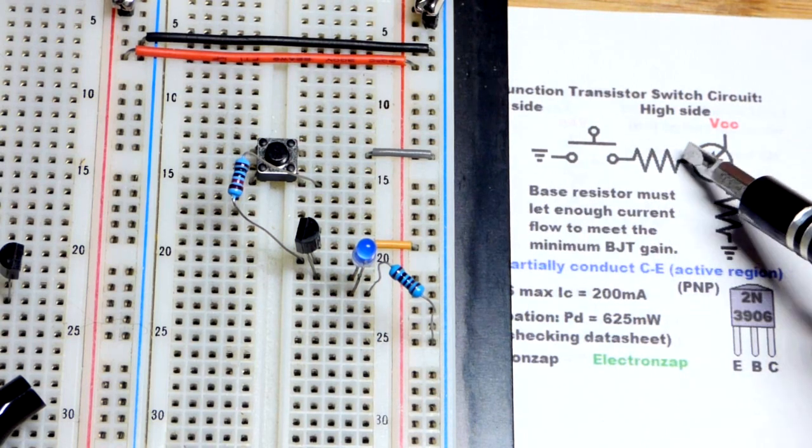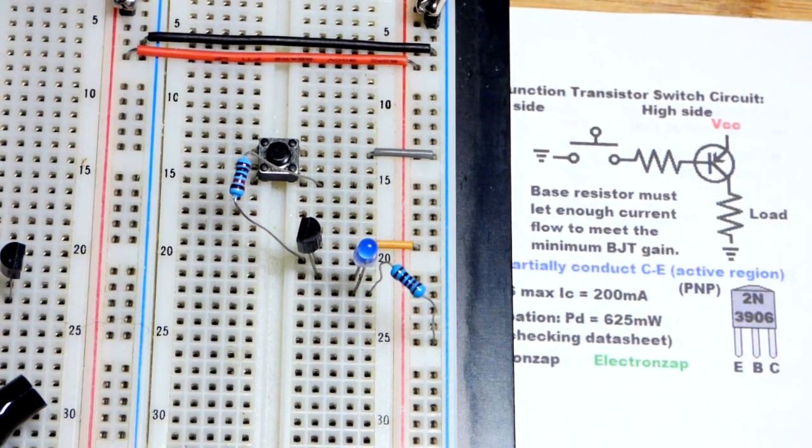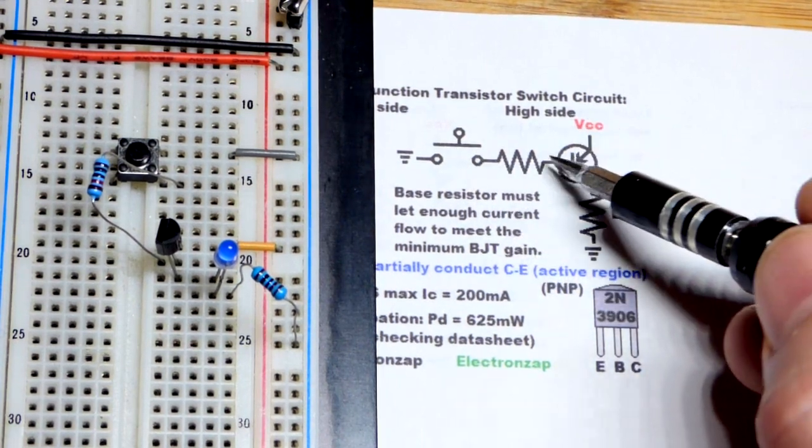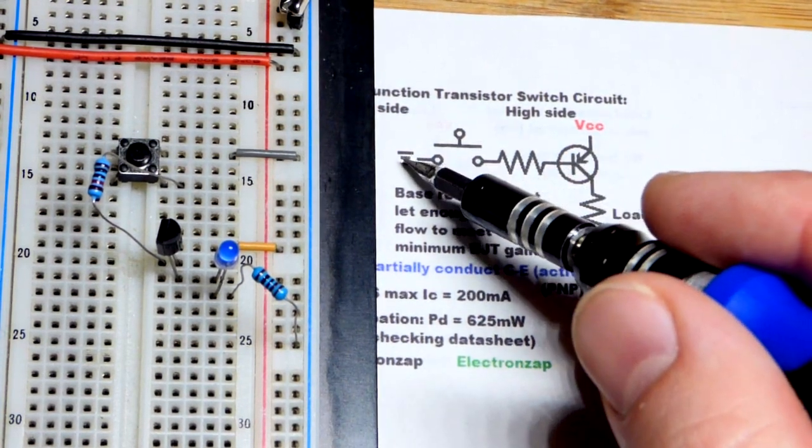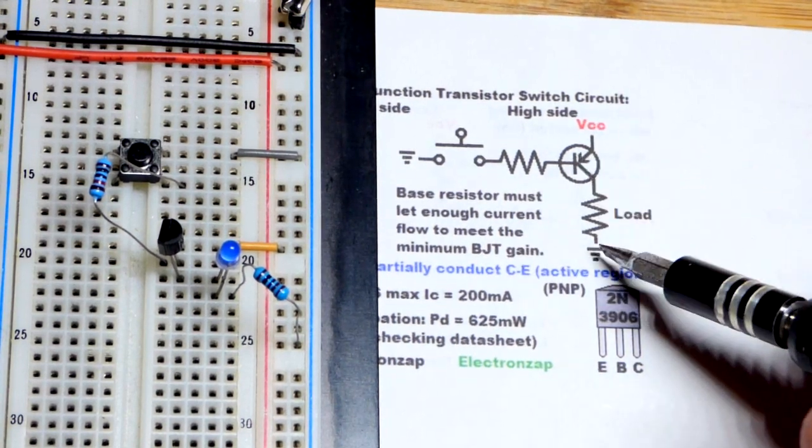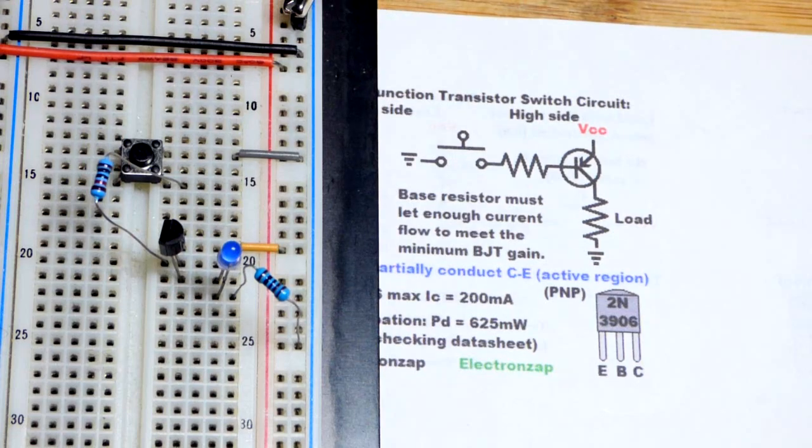Now the current is going, when we close the switch, a small current going from emitter to base to ground there. Remember the switch is closed. This allows a large current to go from emitter to collector through the load and to ground.